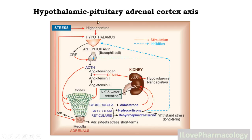This is the hypothalamic-pituitary-adrenal cortex axis. Whenever there is a stimulation from the higher center to the hypothalamus, the hypothalamus will release CRF, which stands for corticotropin releasing factor or corticotropin releasing hormone. This CRF will stimulate the anterior pituitary gland, from which there will be release of adrenocorticotropic hormone, that is ACTH.